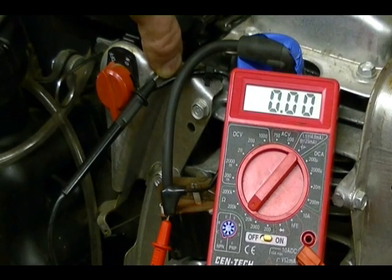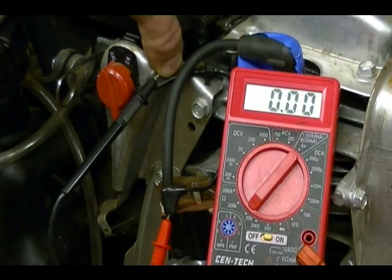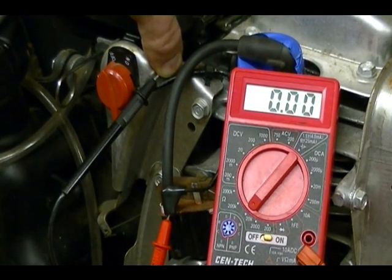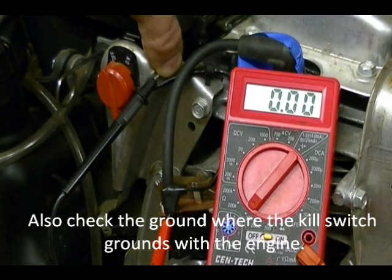If the meter stayed one in both switch settings then definitely need to replace your switch. Or if you get a high resistance in the off position then you've got either bad contacts in the switch or you're not making good contact with your leads. But it's most likely probably the switch.